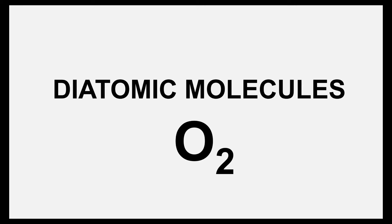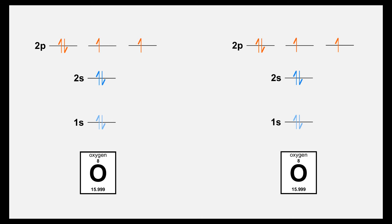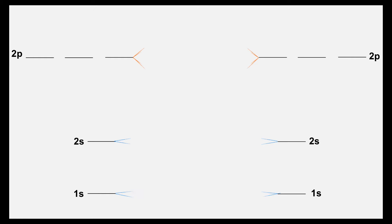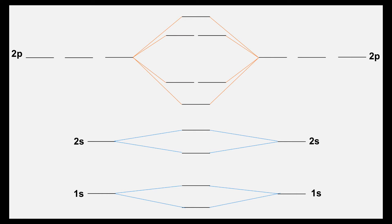Now we're going to be talking about diatomic molecules — in this case O2. This was us filling in the valence electrons for oxygen, and we're going to combine the two. Instead of electrons, we're going to be looking at molecular orbitals. We still have the 1s, 2s, and 2p energy levels. For 1s, we're going to have a sigma bonding and sigma anti-bonding orbital — two 1s valence orbitals make two molecular orbitals, so orbitals are conserved.